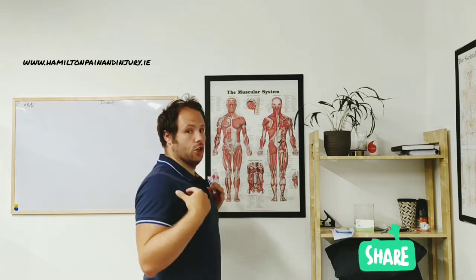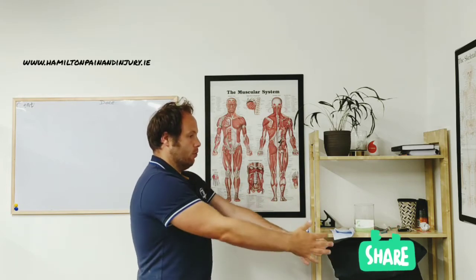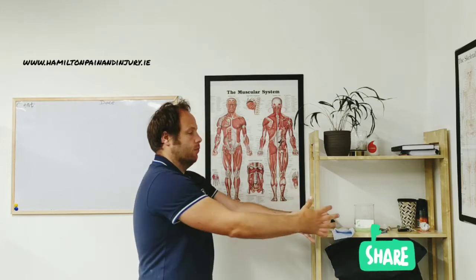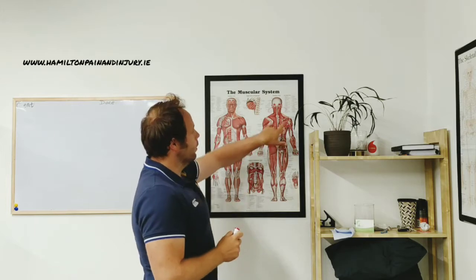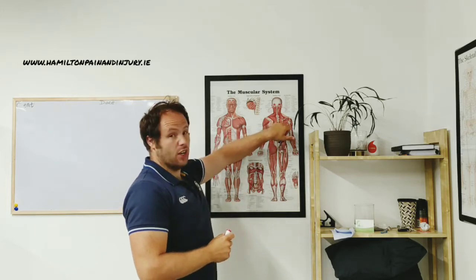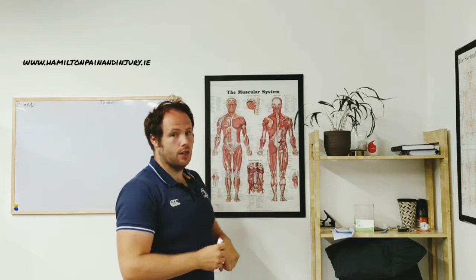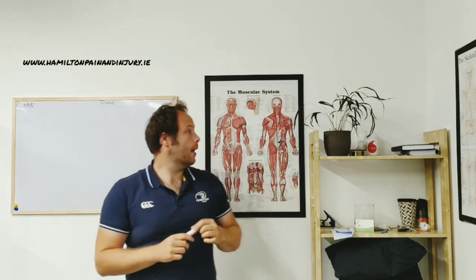But when we're cycling our shoulders tend to be protracted which means they go forward, so your shoulder blades are going that way on your rib cage which would put a lot of stress, just stretch and strain in the muscles here.